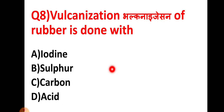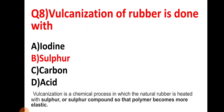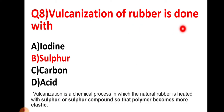Question number eight: vulcanization of rubber is done with — vulcanization is the chemical process in which natural rubber is heated with sulfur or a sulfur compound so that the polymer becomes more elastic. Therefore, vulcanization of rubber is done with sulfur; option choice B is the right answer.